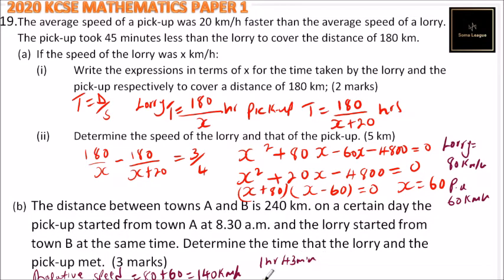So this way, you add to the time that they started. So 8:30, you add 1 hour, 43 minutes, and you will be able to get they arrived at 10:13 a.m.